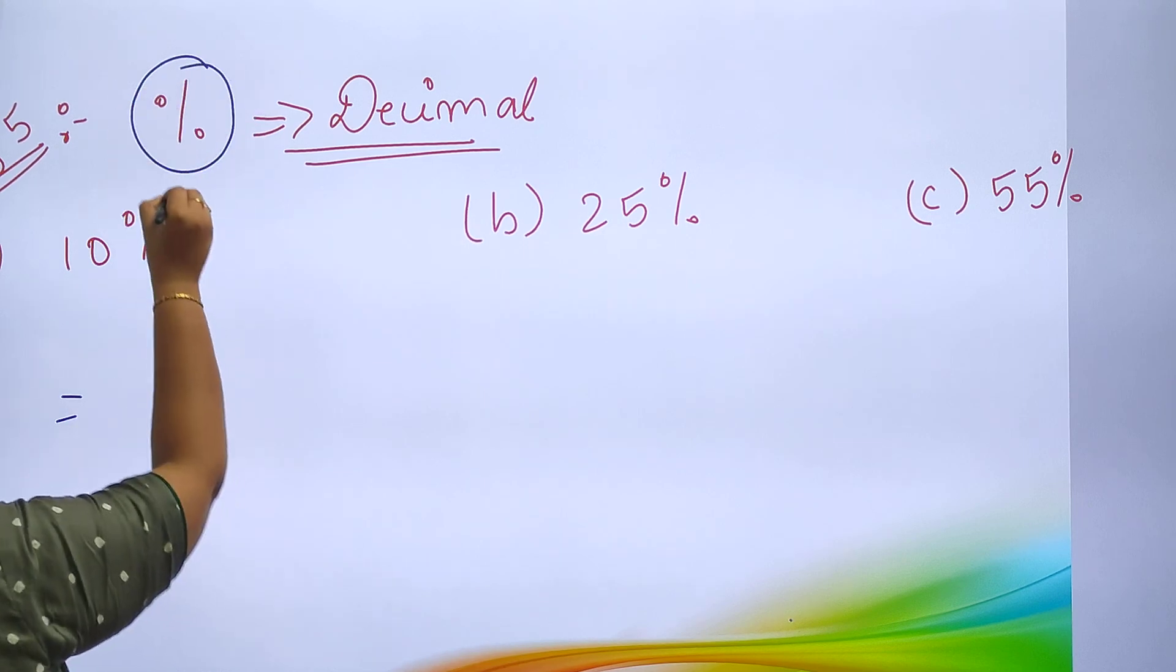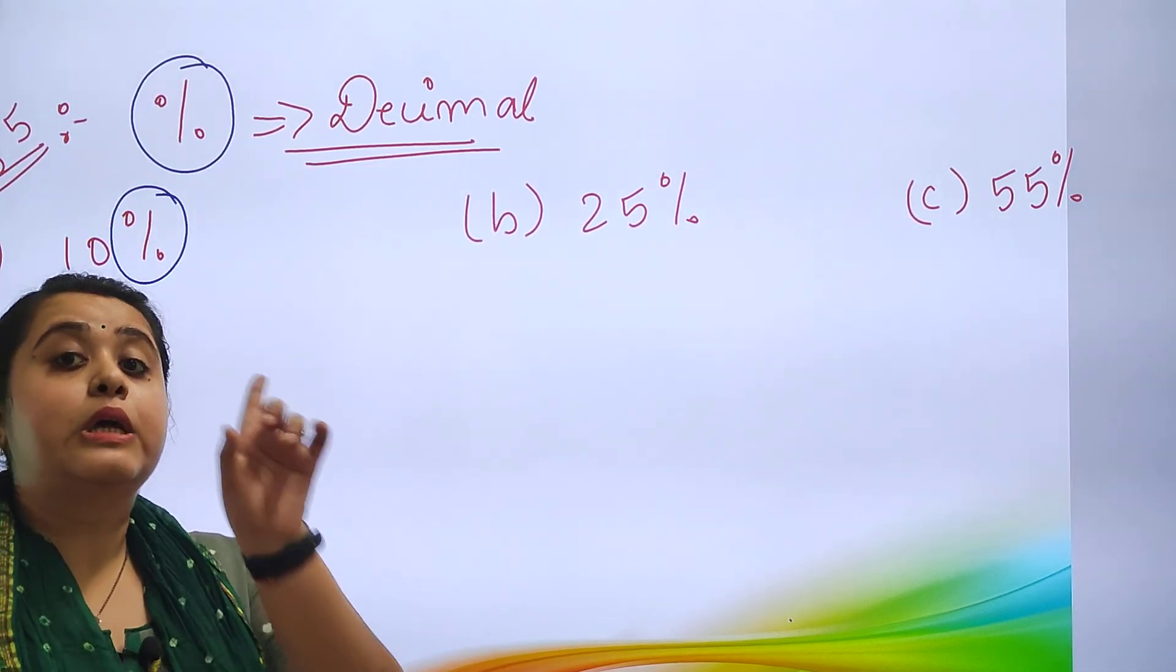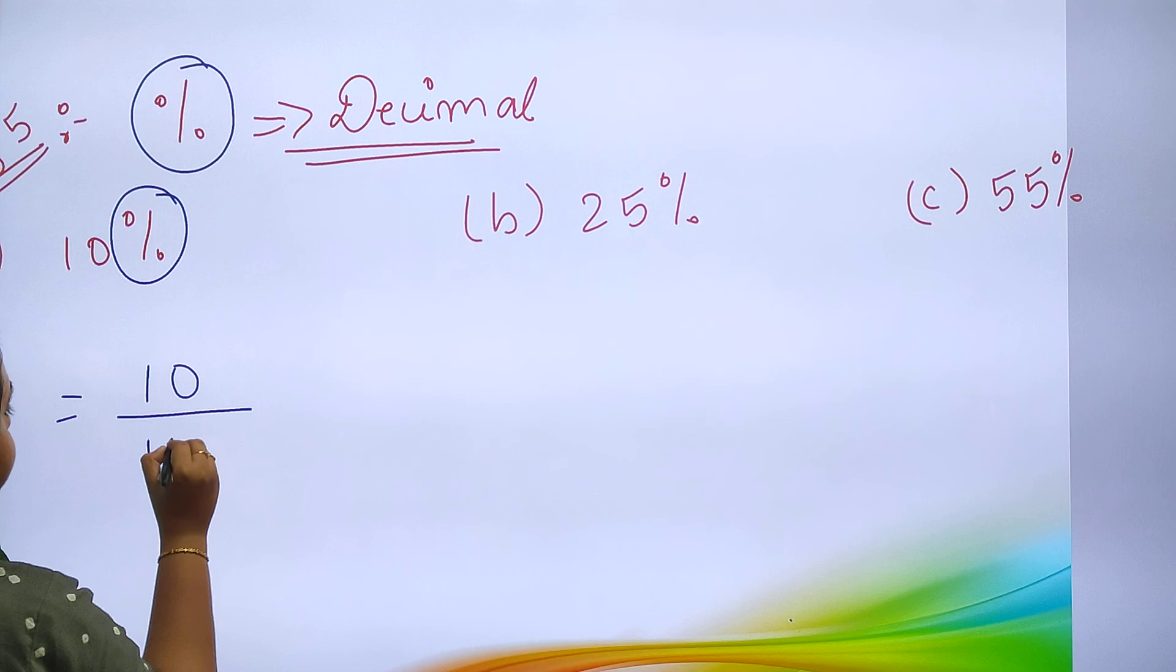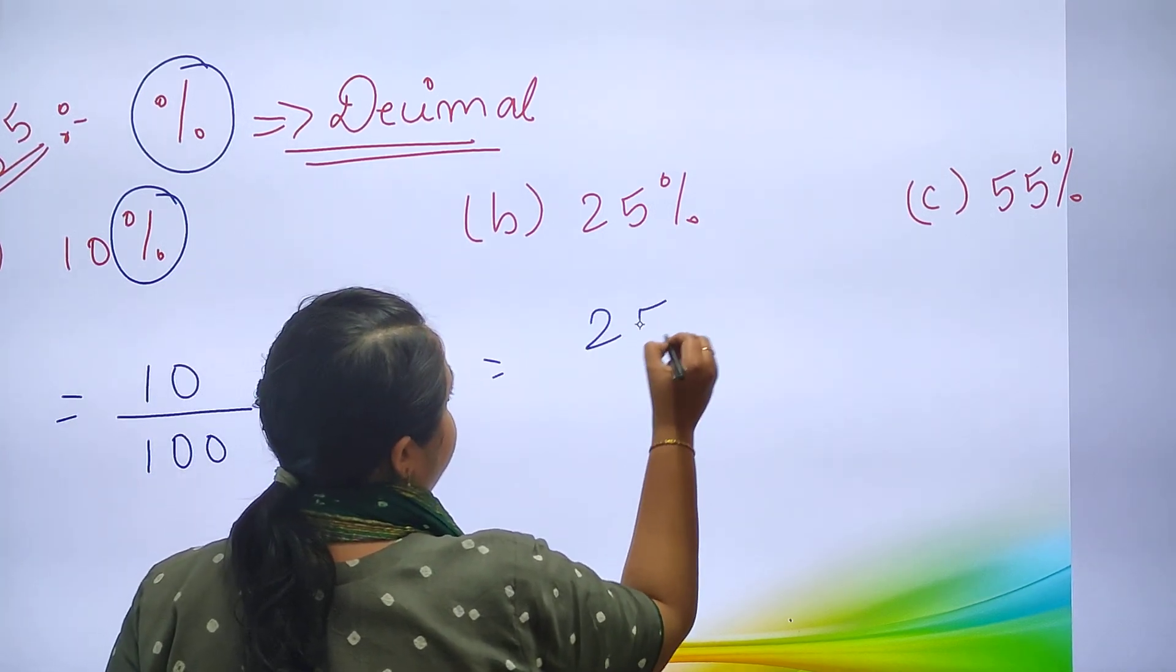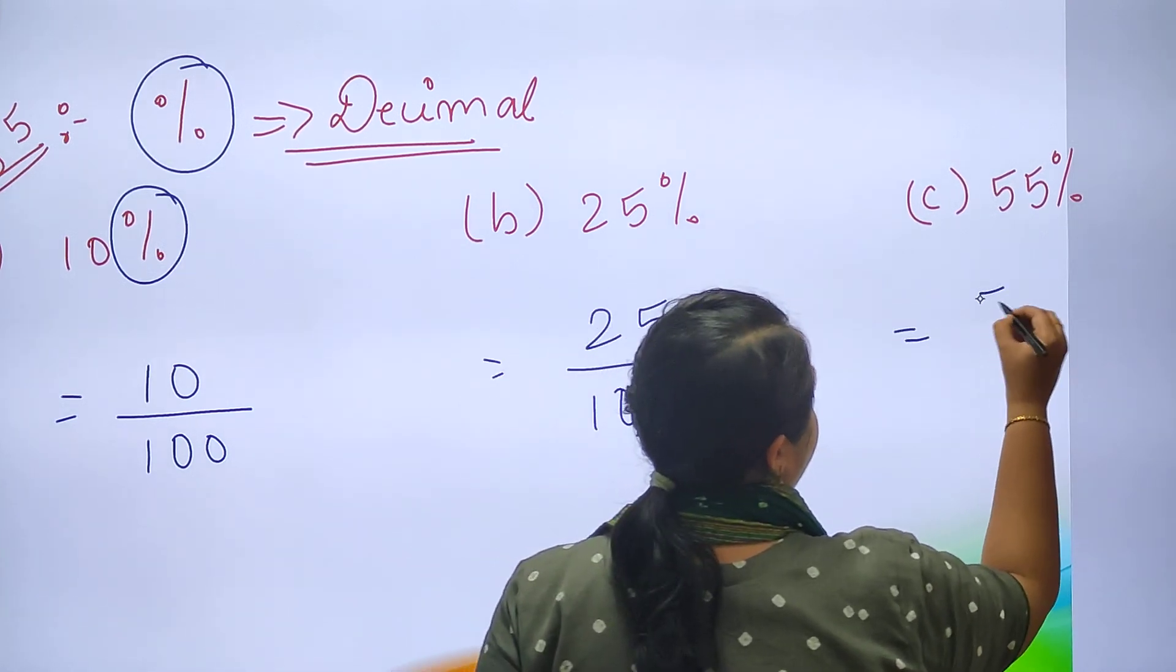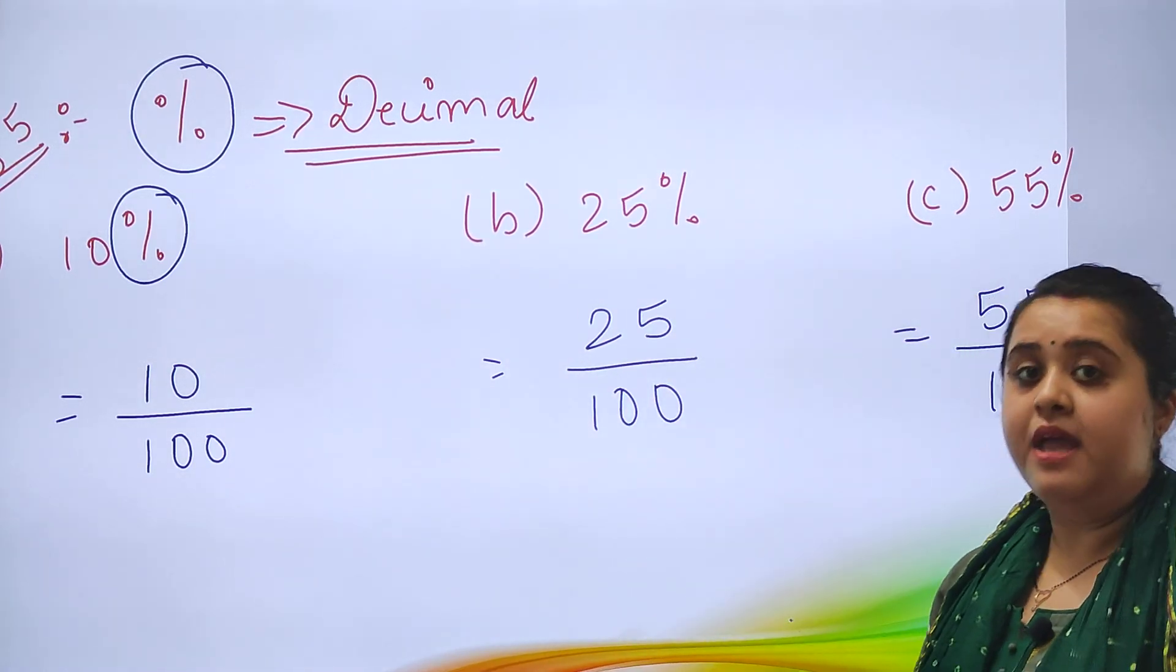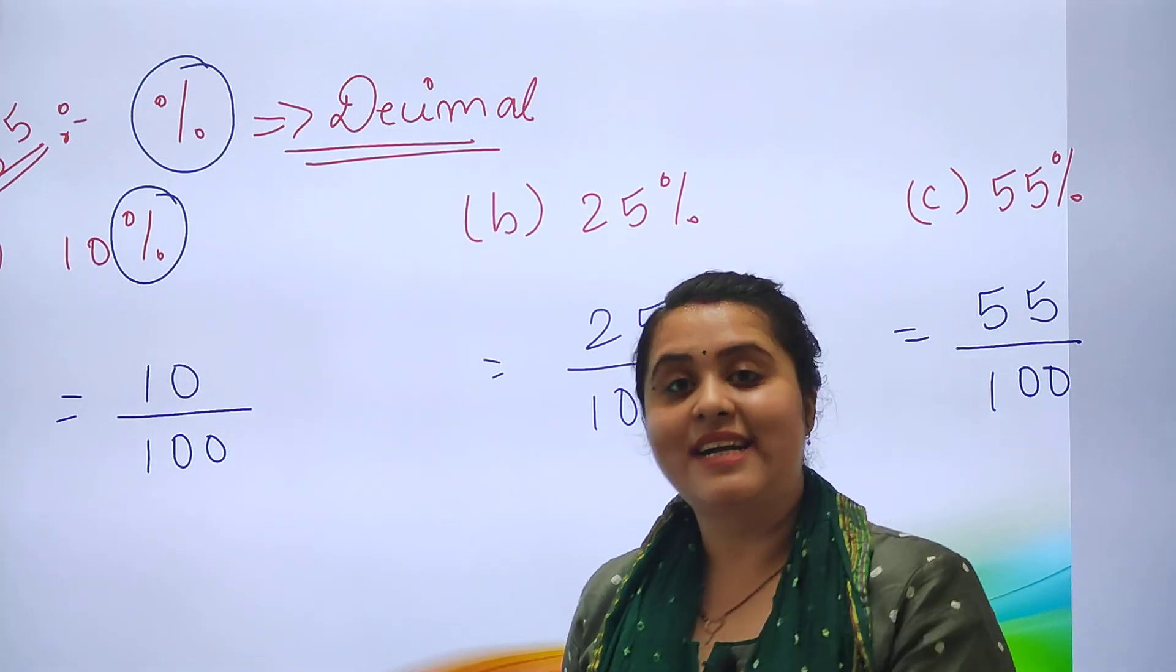We will be dividing it with 100. Why 100? Because percentage is there. So 10 divided by 100, 25 divided by 100, 55 divided by 100. This is the fraction form. Now we will be converting this fraction form into decimals.